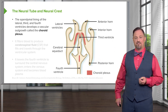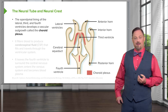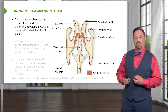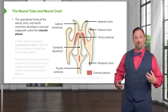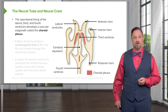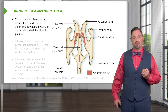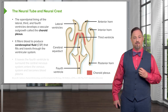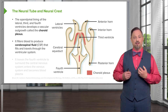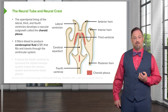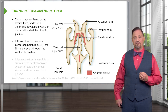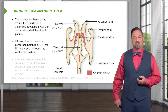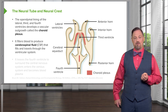What creates the cerebrospinal fluid? The ependymal lining has small areas that enlarge and proliferate, creating a structure called the choroid plexus. The choroid plexus is very vascular — there are many blood vessels within it — and it filters the blood and releases the CSF into the ventricular system. CSF is simply an ultrafiltrate of blood that moves through the ventricular system.